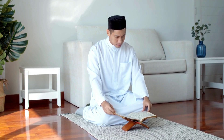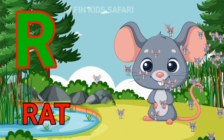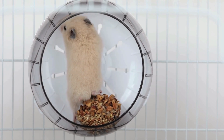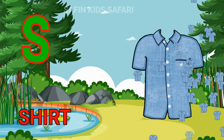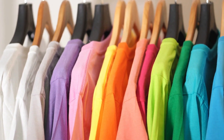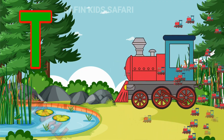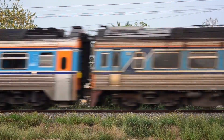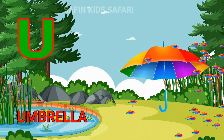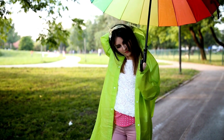Q for Koran. This is Koran. R for Rack. U for Umbrella. Nice Umbrella.